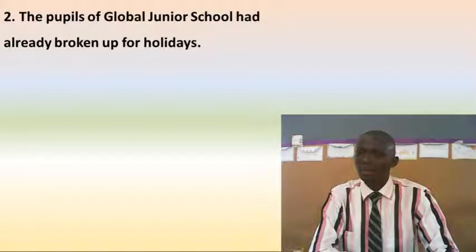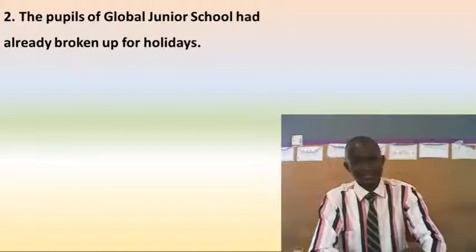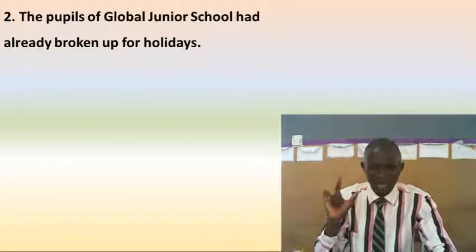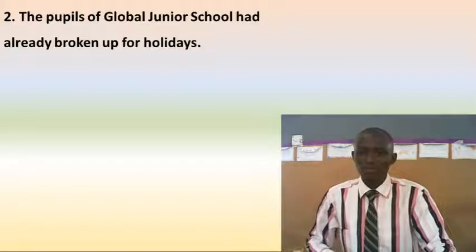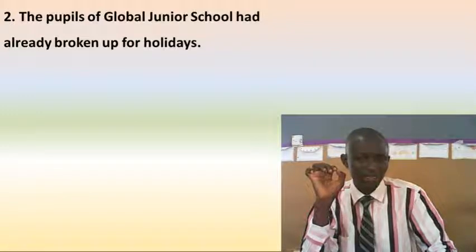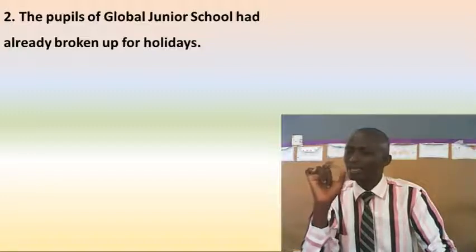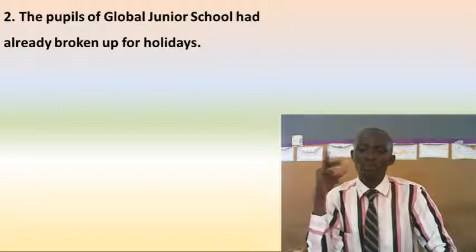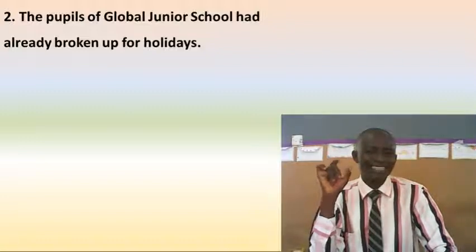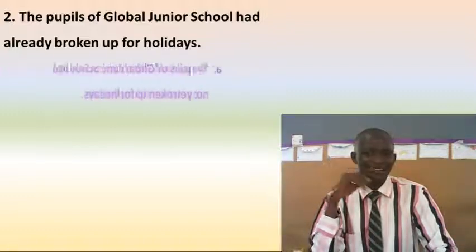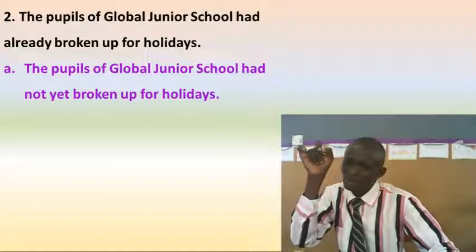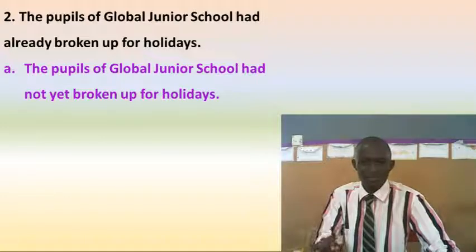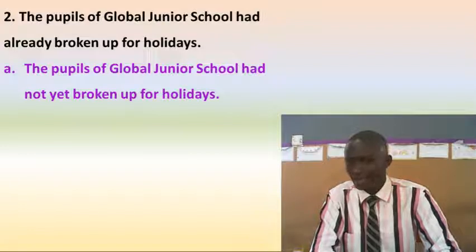Number two: 'The pupils of Global Junior School had already broken up for holidays.' Mark the word 'had' — that tells us this is past perfect tense. 'Already' is used in affirmative sentences only. 'Yet' is used in either negative statements or in question form — interrogative form. The answer is: 'The pupils of Global Junior School had not yet broken up for holidays.' Don't cling to the meaning — learn that 'yet' is used in a negative form.